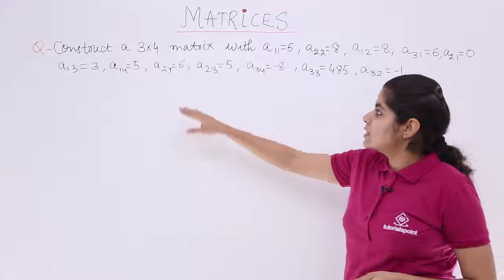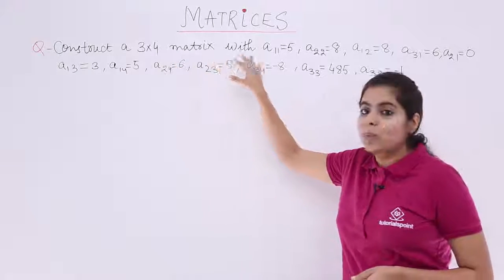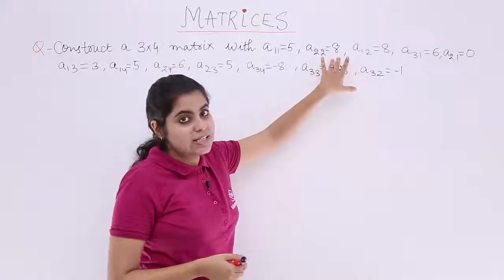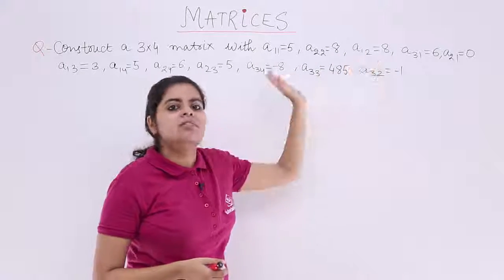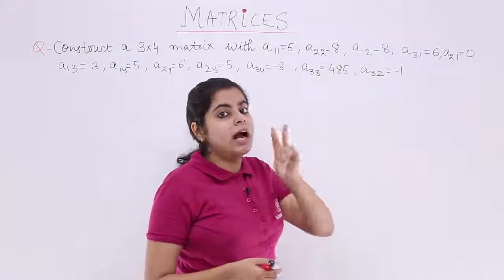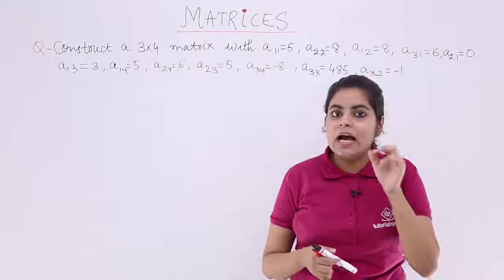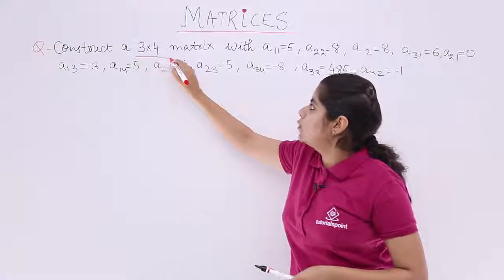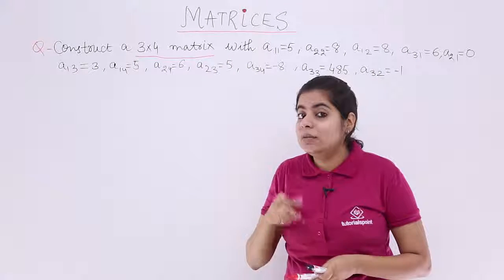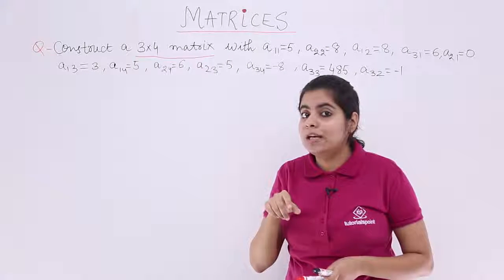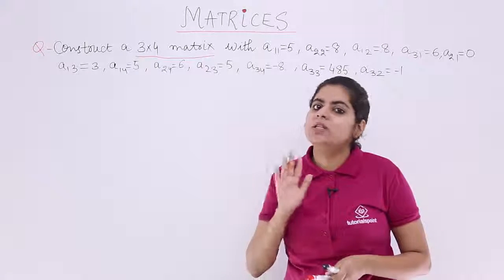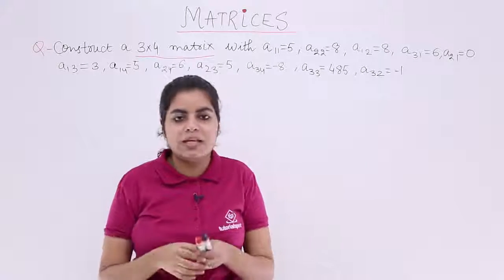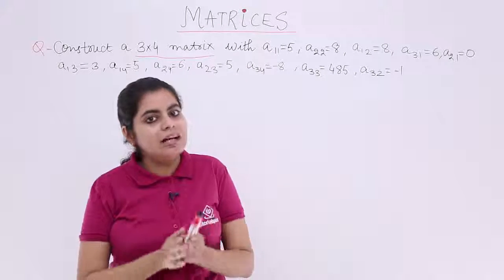The question is, construct a 3x4 matrix with different elements given. A11 is given to me as 5, A22 as 8, A12 as 8 and so on. That means, I only have two things known to me. That I have to construct a matrix on my own and the matrix should be of the order 3x4. And 3x4 means, I would be needing how many elements? 3x4 that means 12 elements and those 12 elements are given to me explicitly. I just have to arrange them because they are given in a random order and that would be my answer.